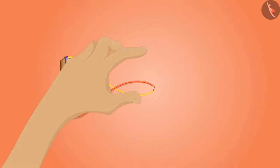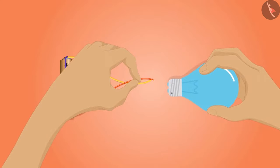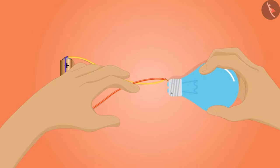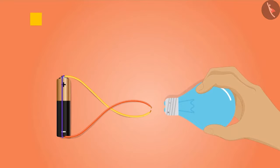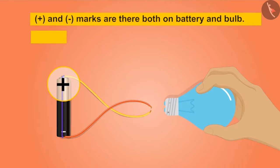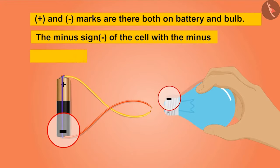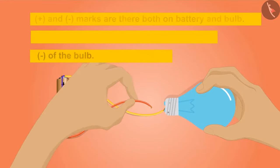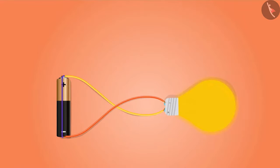'Let me connect both these ends to the bottom of the bulb.' The bulb does not turn on. 'Look at this - there are plus and minus marks on both battery and bulb. Let's connect the plus sign of the cell with the plus sign of the bulb and the minus sign of the cell with the minus sign of the bulb.' On doing so, the bulb turns on!